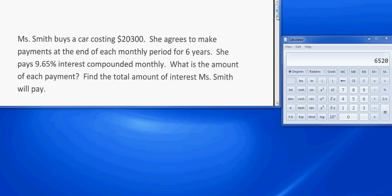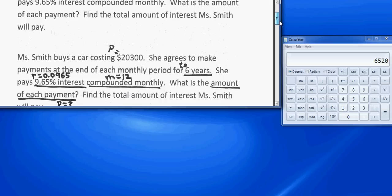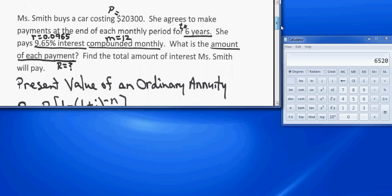The first thing I would say about this is that it's a present value problem. All these car payment and house payment type problems are present value problems. Beyond that, you have to figure out what each thing is that will go into the formula.